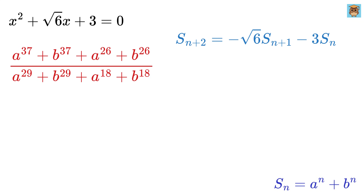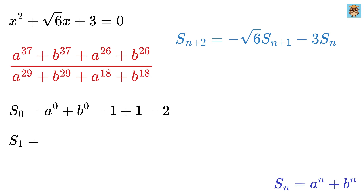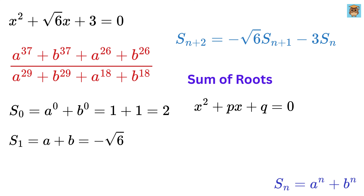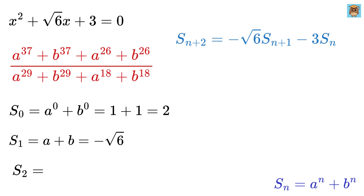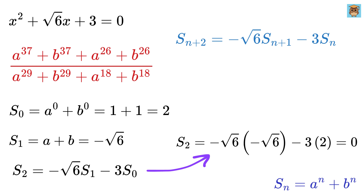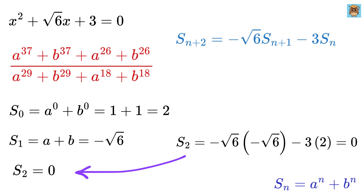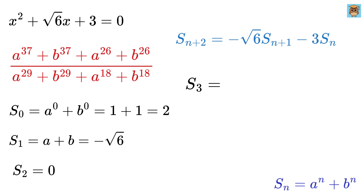This way, we have a clean recurrence relation. We can see that s_0 equals a to the 0 plus b to the 0, or 1 plus 1, which is 2. Then s_1 equals a plus b, which is minus root 6. This is because the sum of roots of the equation of form x squared plus px plus q equals 0 is negative p. So for this equation, p is root 6, and hence the sum of the roots a plus b equals minus root 6. Now let's compute s_2 using this recurrence. Substituting s_0 and s_1, we get s_2 as 0. Then we can similarly compute s_3 using s_1 and s_2, to get s_3 equals 3 root 6.